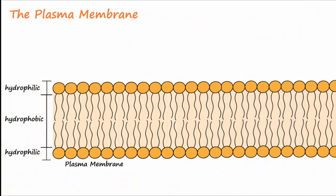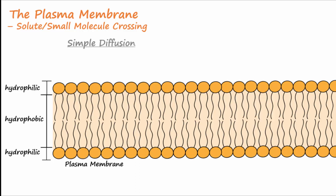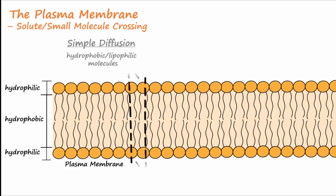Let's now describe the methods by which solutes or small molecules cross the membrane. The first method is simple diffusion and is utilized by hydrophobic or lipophilic molecules. Since the plasma membrane is hydrophobic, these hydrophobic substances don't need a channel or carrier protein. They just go down their concentration gradient and pass directly through the membrane.